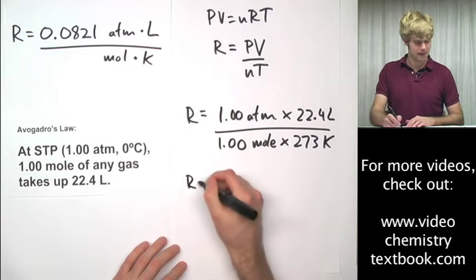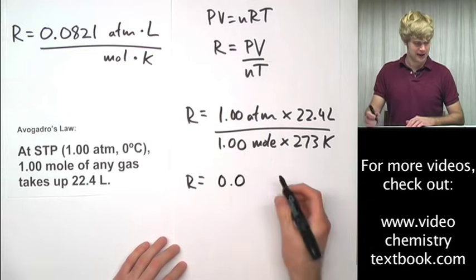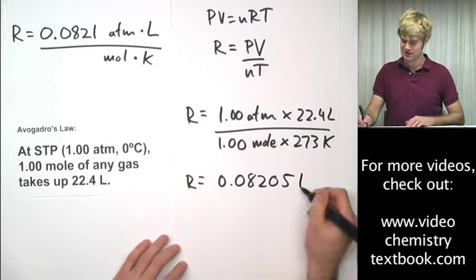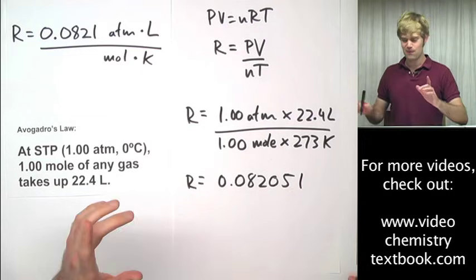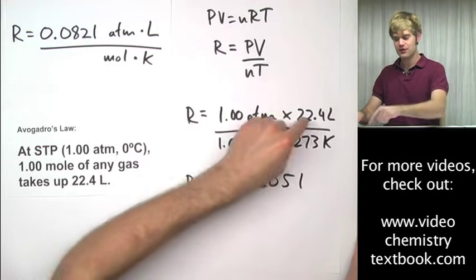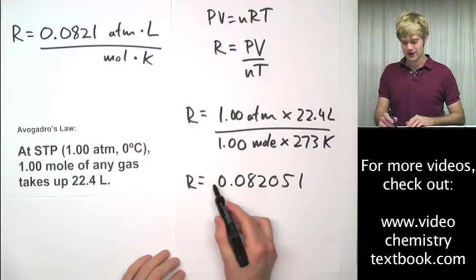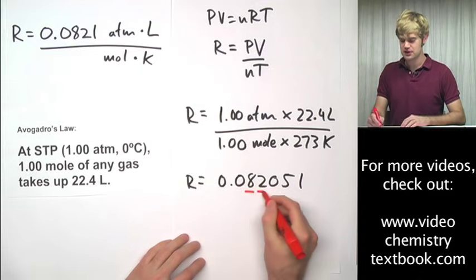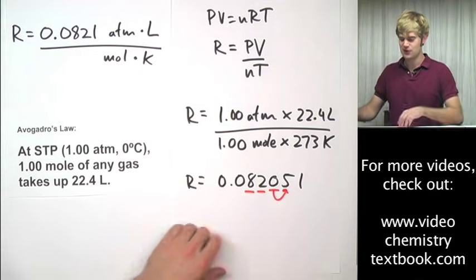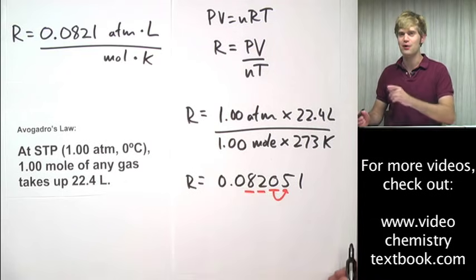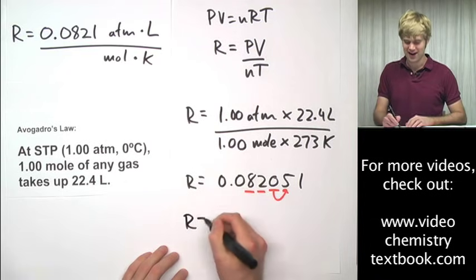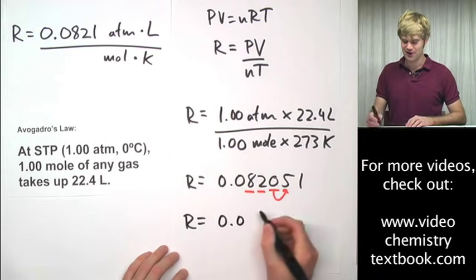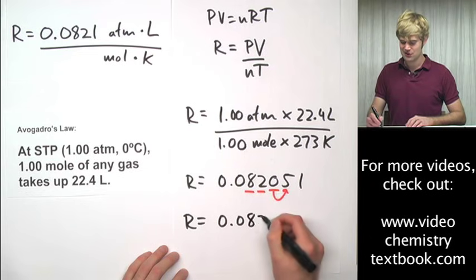When we do that math, the number we get is 0.082051. We go through three significant figures. The zeros at the front are not significant, but this one is, this one is, and this one is. We look next door to the five. Do we round up or keep it the same? We round up. And check out what we get: 0.0821.